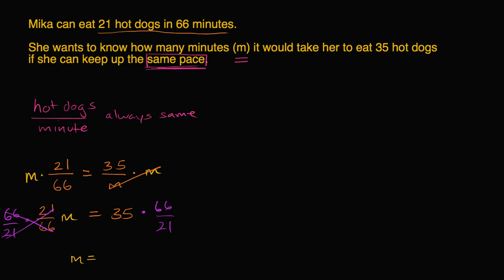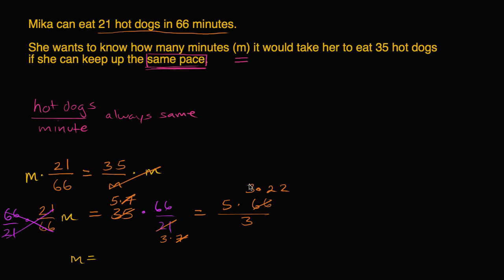Now, 35 is the same as 5 times 7, and 21 is 3 times 7. So you're multiplying by 7 in the numerator and dividing by 7 in the denominator — they cancel out. This simplifies to 5 times 66 over 3. And 66 is the same as 3 times 22. You have a 3 in the numerator and a 3 in the denominator — 3 divided by 3 is 1. So you're left with 5 times 22, which is 110. So it would take her M = 110 minutes to eat 35 hot dogs at the same pace.